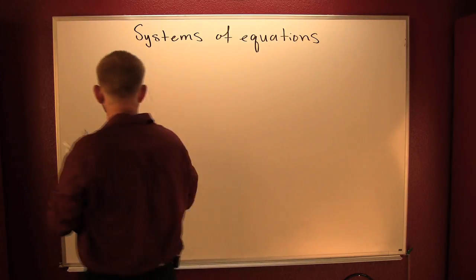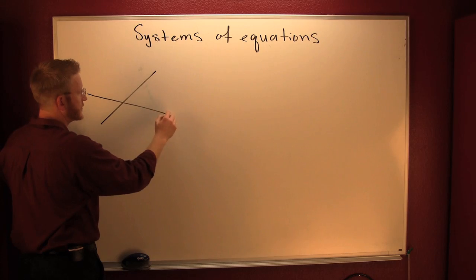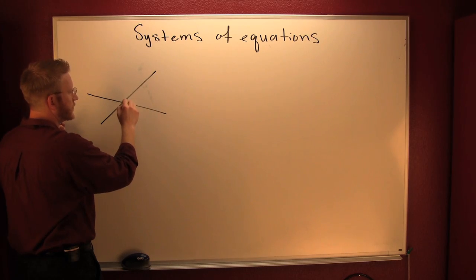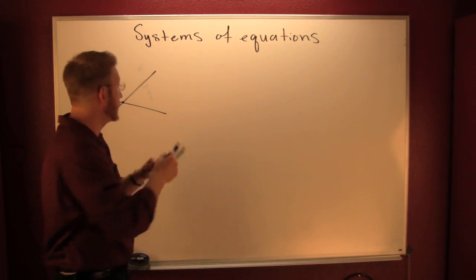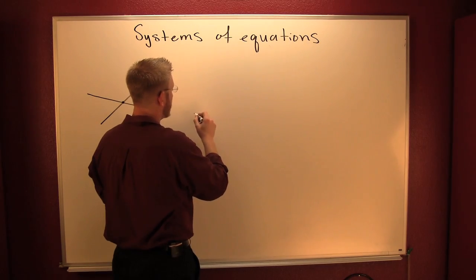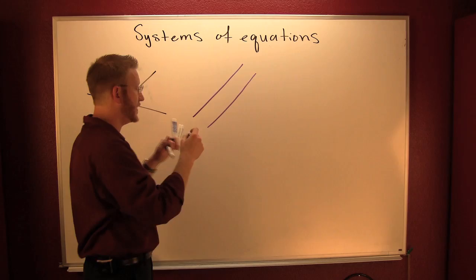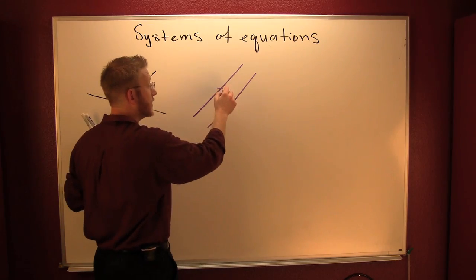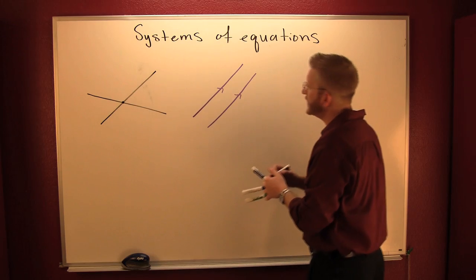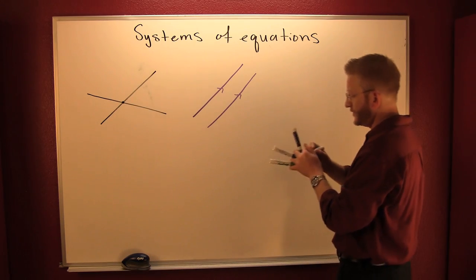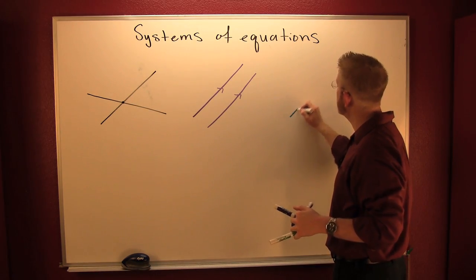First way: they can intersect. The second way: they can never intersect — they can be parallel lines. And the third possible interaction to complete our trifecta is they can be the same line.